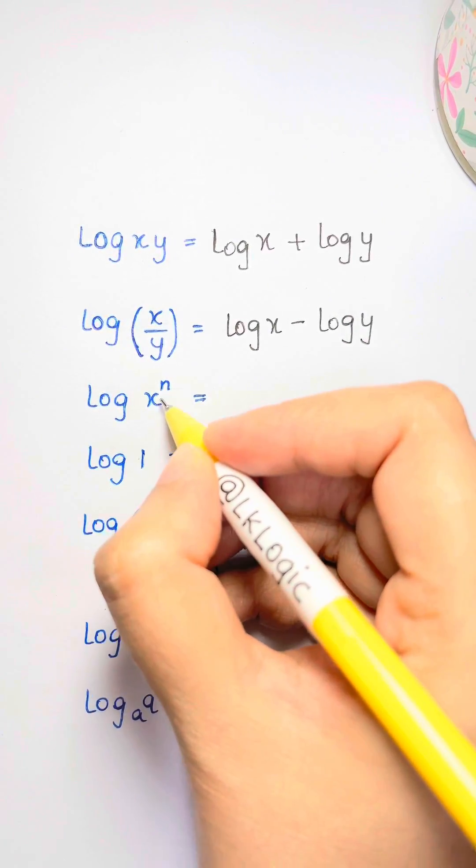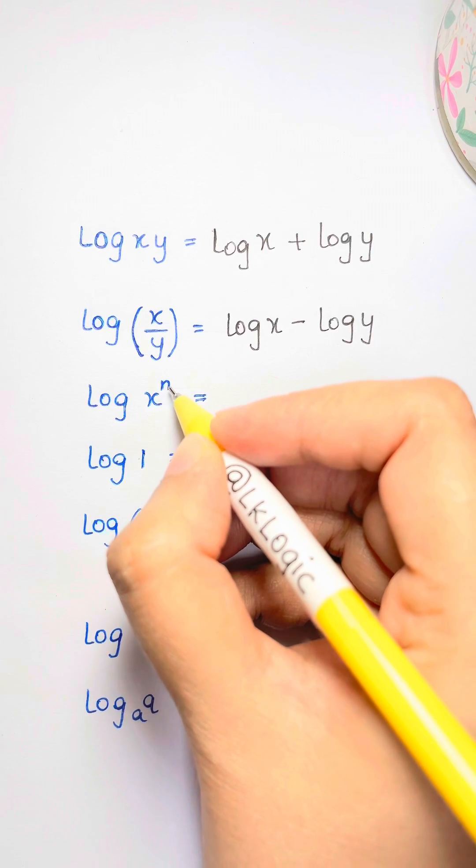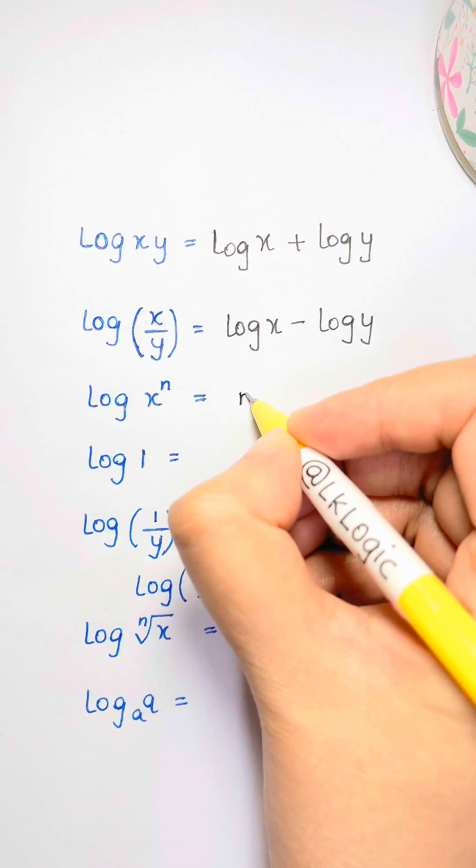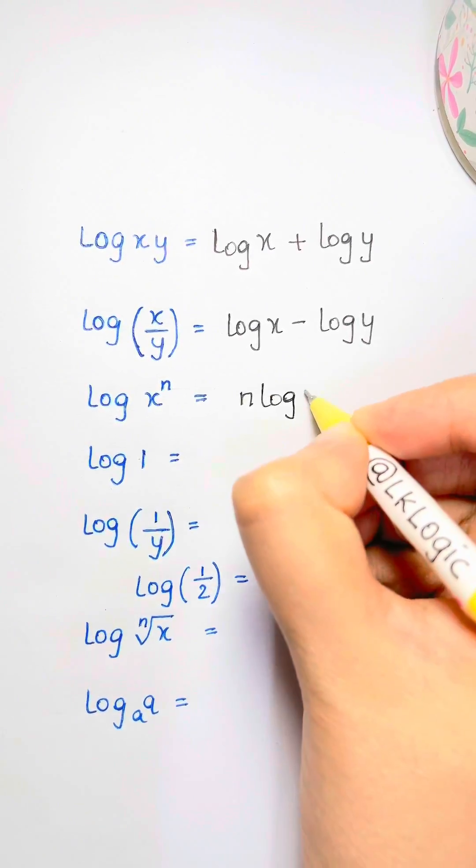And here, when you take a number that already has a power and you raise it to another power, you multiply the powers. So the n comes down, so you have n log x.